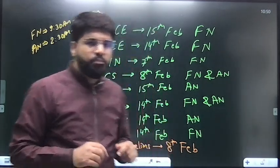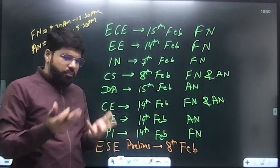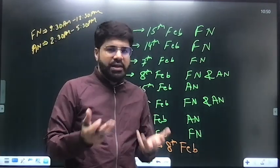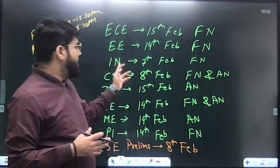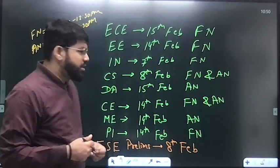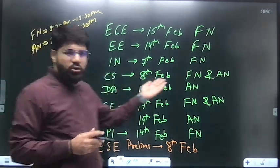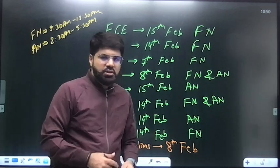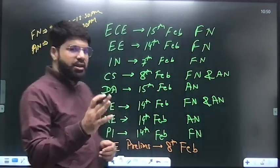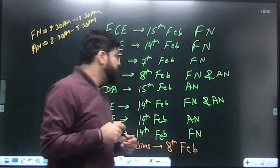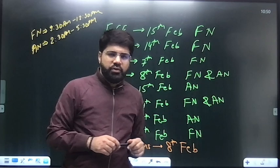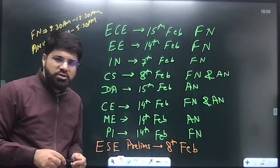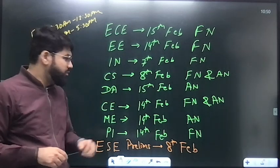Of course if your primary paper is IN, then anyways I think your target will be IN only, 7th February, other than the Engineering Services. Computer Science as I told you was expected because Computer Science is not in the Engineering Services paper. Computer Science is on 8th February, both the slots forenoon and afternoon. Again as expected, two slots for Computer Science. Civil is on 14th February, both the slots forenoon and afternoon.